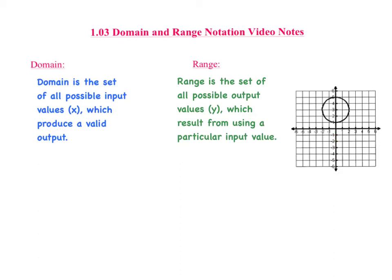So if we want to look at the domain of this circle right here, we see that the x value — the domain — starts over here where the x value would be negative 2, and it continues towards the right until this point right here, where the x value is positive 2. So we would say that x is greater than or equal to negative 2, but less than or equal to positive 2.